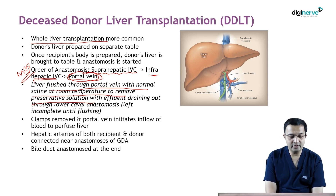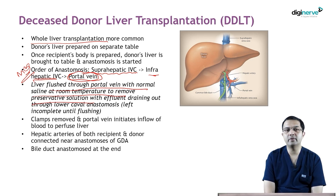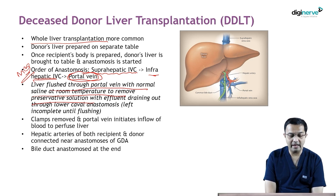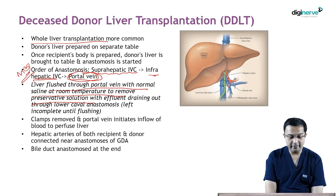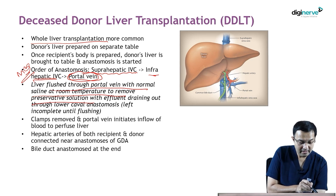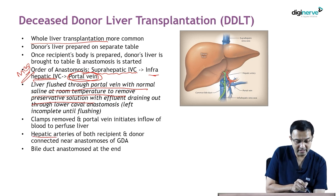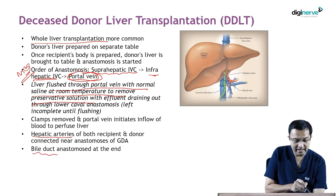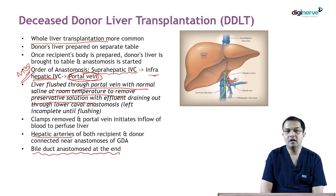After doing this, you complete the portal vein anastomosis and remove the clamp, and portal vein blood flow is initiated to reperfuse the liver. Following reperfusion, we will do the hepatic artery anastomosis, and the bile duct anastomosis is the last one to be done.